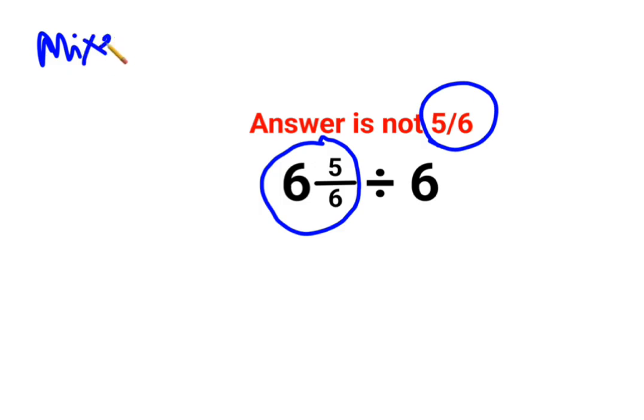Your first step is to convert it into an improper fraction. Now what is an improper fraction? A fraction whose numerator is greater than the denominator.